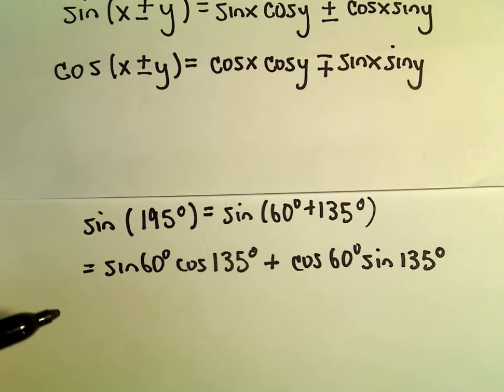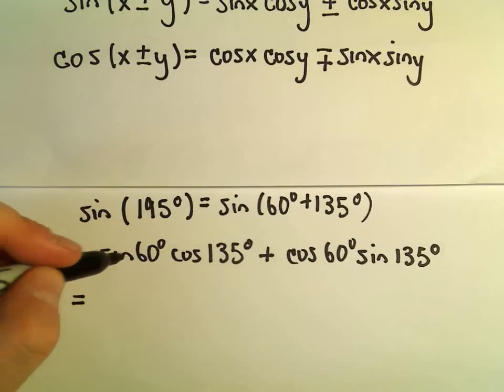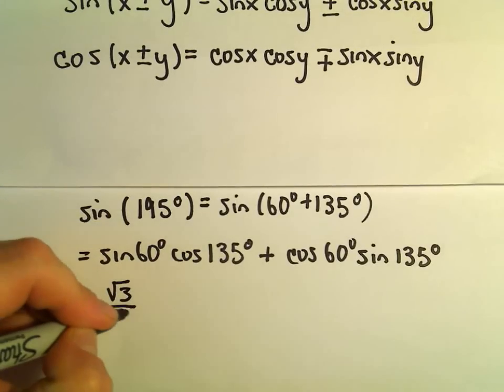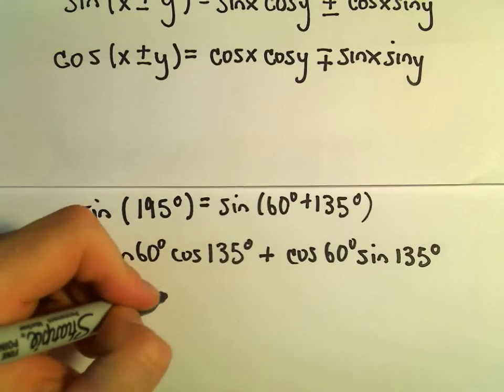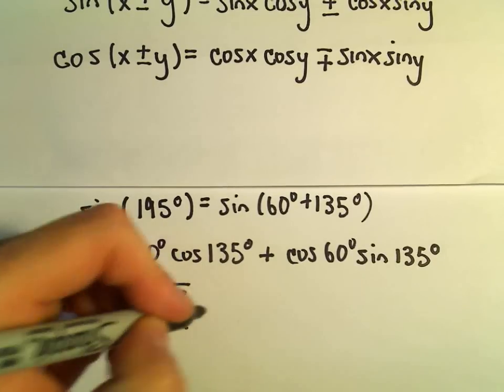And now hopefully these are values that we know. So sin(60°), that's the same as sin(π/3), that's going to give us √3/2. Cosine of 135 degrees, that's going to be in the second quadrant, that's going to give us -√2/2.